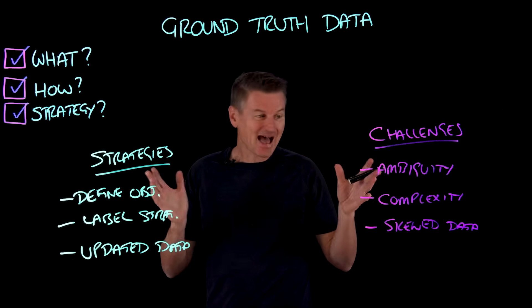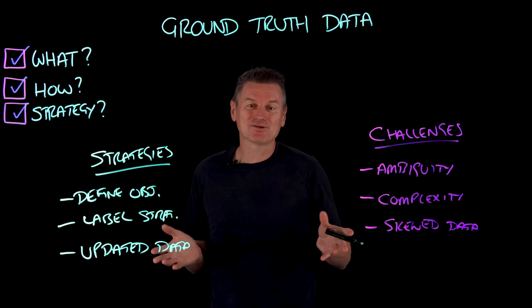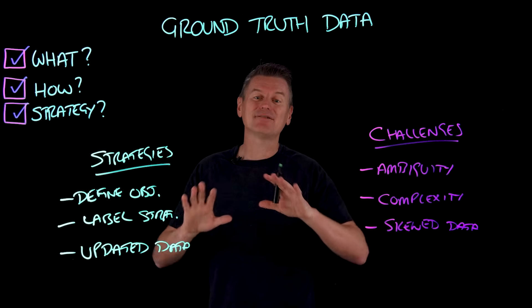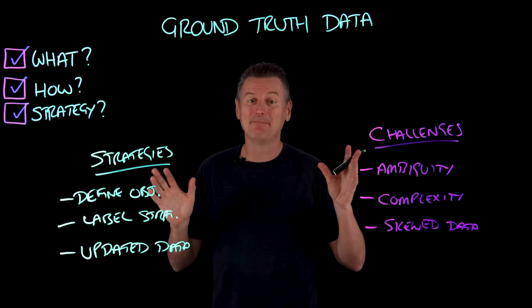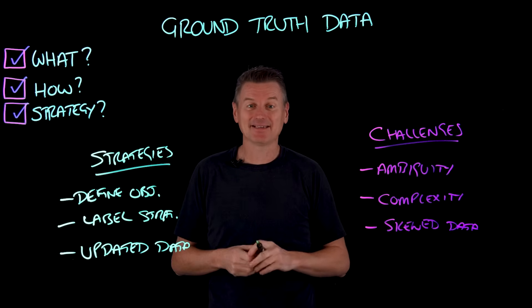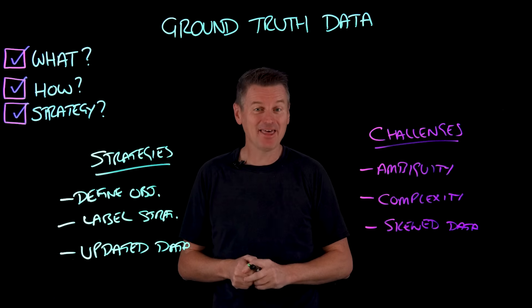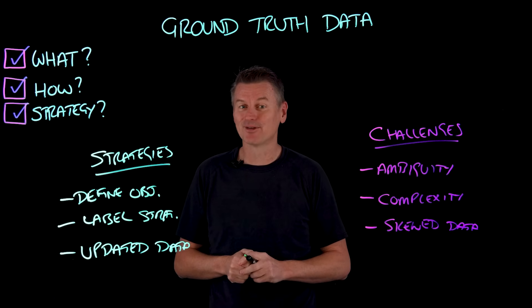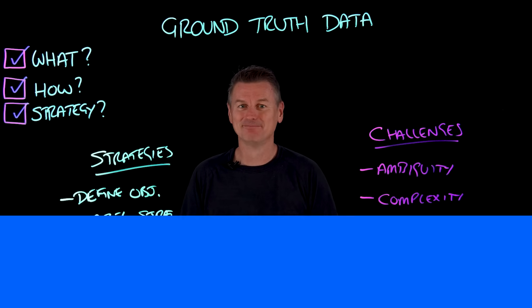Accurate labeling of the ground truth data is foundational to all of this. Better labels lead to better AI models. And only then will the ground truth set you free.